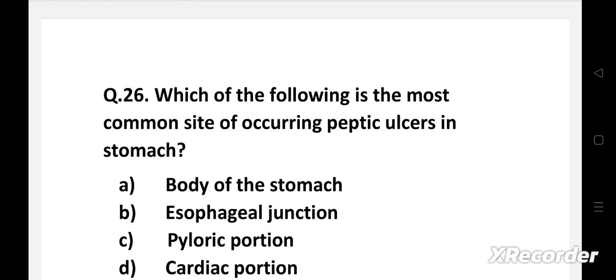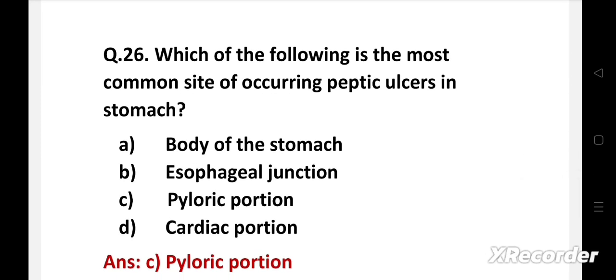Right answer is option C, pyloric portion. Peptic ulcer is the erosion of mucosal wall of stomach, duodenum, or in esophagus. Pyloric portion is the most common site of peptic ulcer. Increased secretion of hydrochloric acid is seen in this condition.